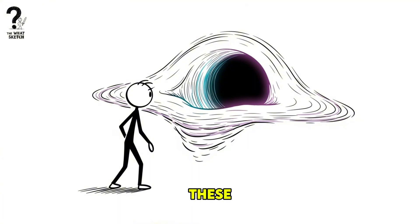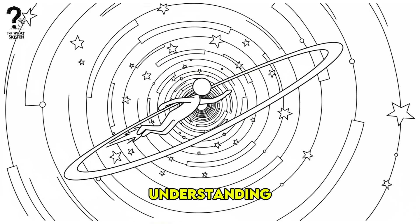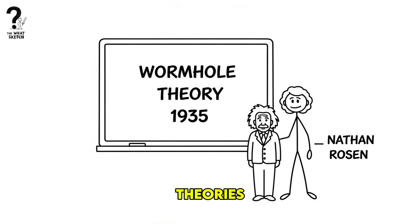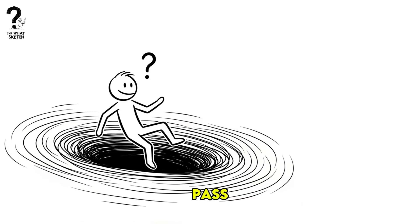According to current understanding, these wormholes would be wildly unstable and snap shut the instant they formed. But remember, our understanding is what breaks down here. Some theories suggest a spinning black hole wouldn't collapse to a point, but to a rotating ring that you could theoretically pass through.